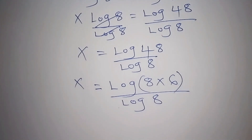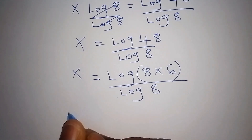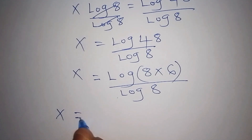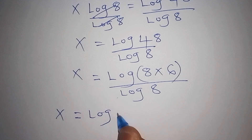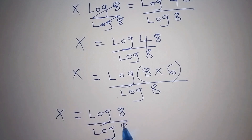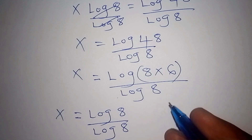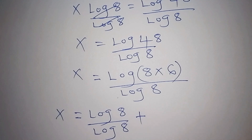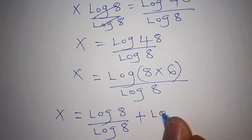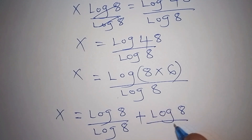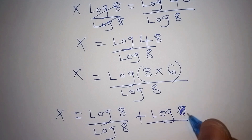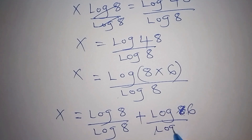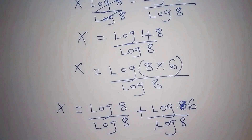We can now express this as x equals the log of 8 all over the log of 8, and then by the laws of logarithms, multiplication changes to addition, plus the log of 6 all over the log of 8.